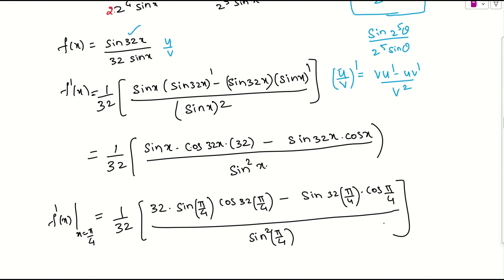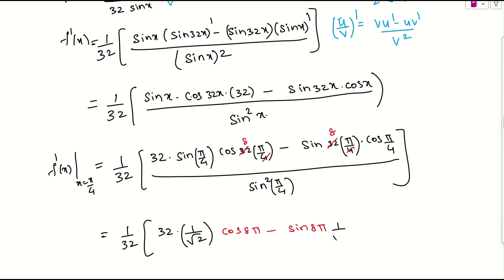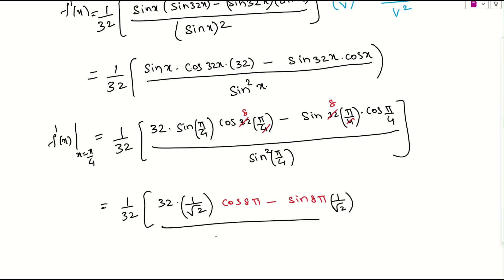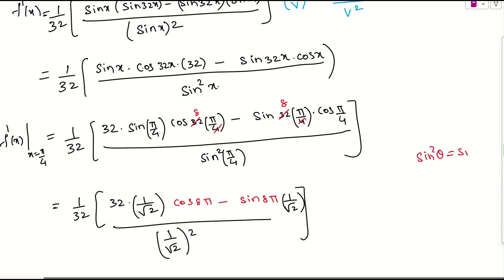Continuing, this is 1 over 32 times 32 times sin(pi/4) times cos(8 pi) minus sin(8 pi) times cos(pi/4), divided by sin squared(pi/4). Sin(pi/4) equals 1 over root 2, and note that sin squared theta is the same as sin theta the whole squared — both are the same. Sin theta squared, however, is different. So sin squared(pi/4) equals 1 over root 2, whole squared.